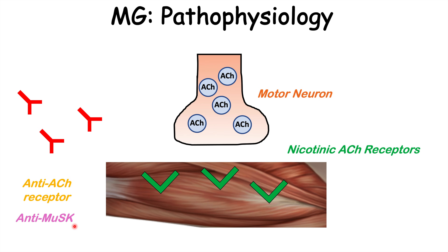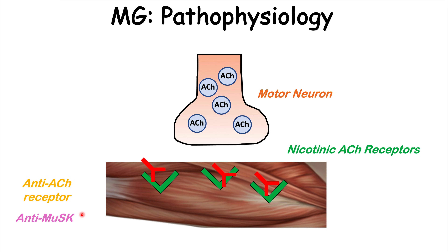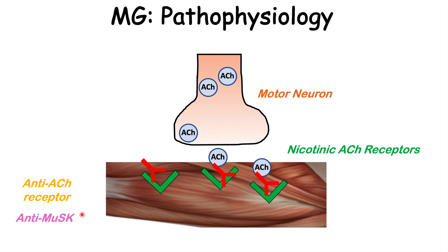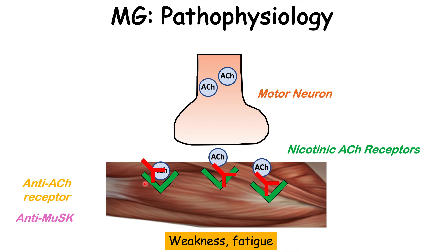These autoantibodies will bind to the nicotinic acetylcholine receptors or other parts of the muscle, which will then prevent acetylcholine from binding to those receptors. In the case of anti-acetylcholine receptor antibodies, those antibodies actually compete against acetylcholine for the acetylcholine receptors on the target muscle. Because of that, acetylcholine can't bind, can't activate the target muscle, and this leads to muscle weakness and fatigue.